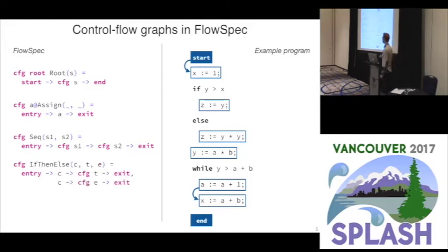Then we have a control flow graph rule for if-then-else which is a condition and then in an else branch. From the entry we can go to the condition and the condition is again a node. So there's the node and there's the arrow from the entry to the condition. Then from the condition we can go into the control flow graph of the then and the else branch, and from the then and the else branch we can go to the exit.